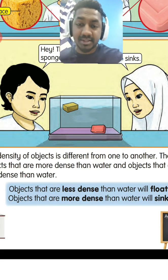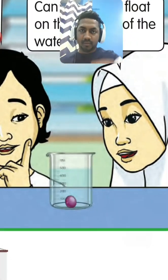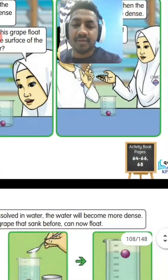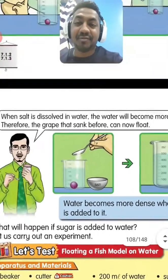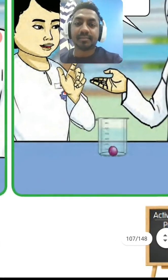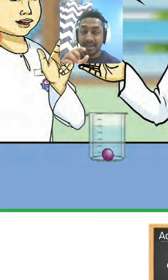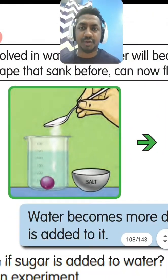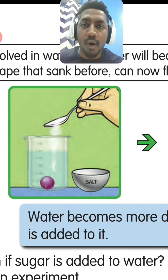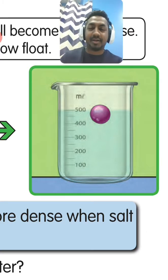Here, water becomes more dense. If you look at this picture, the grape sinks inside the water — it is more dense than water. After adding some salt or sugar, the grape floats. Once you add sugar or salt, the water becomes more dense than the grapes, so the grape becomes less dense than the water and it floats.